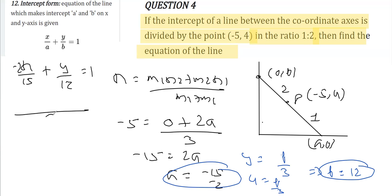The LCM comes out to be 60, so this is -8x plus 5y = 60. Finally, in standard form it is 8x - 5y + 60 = 0.